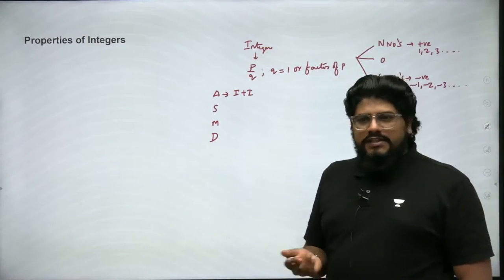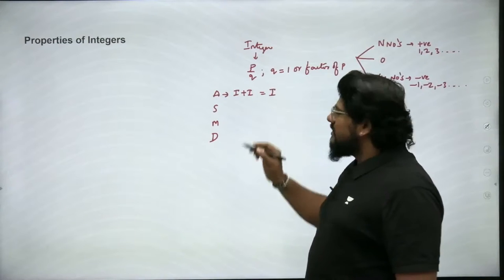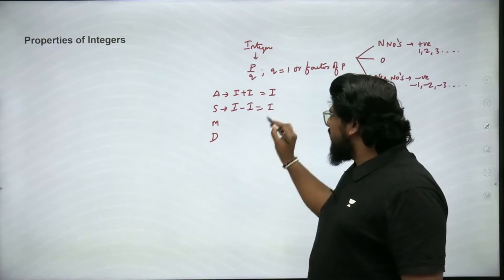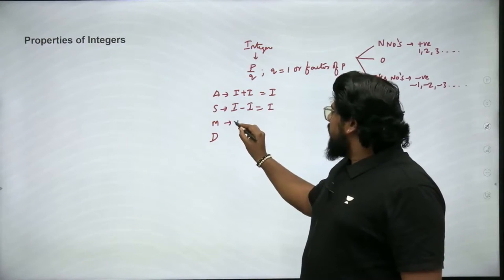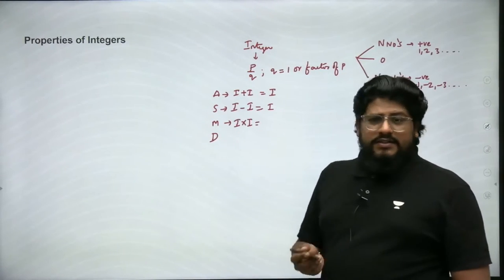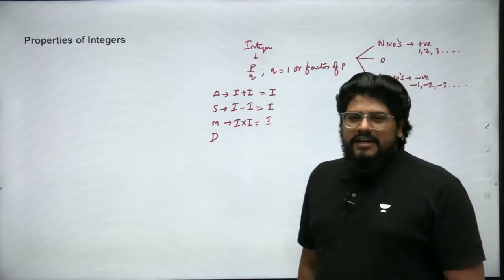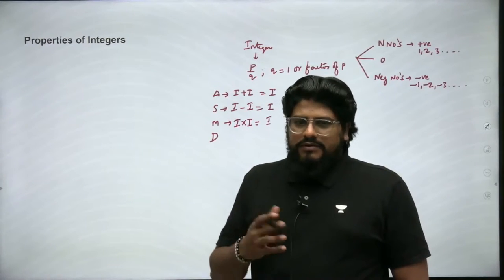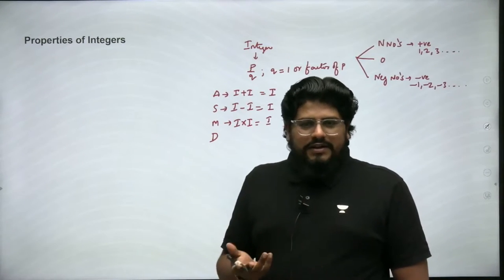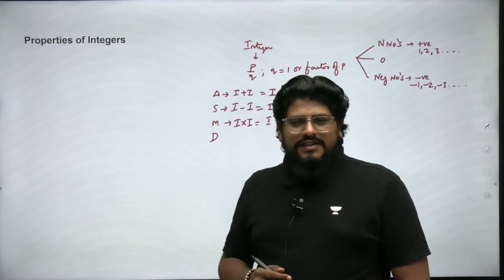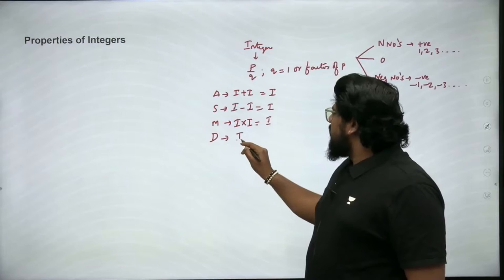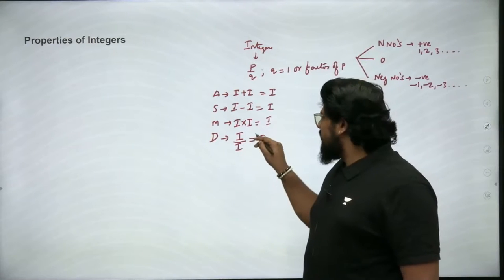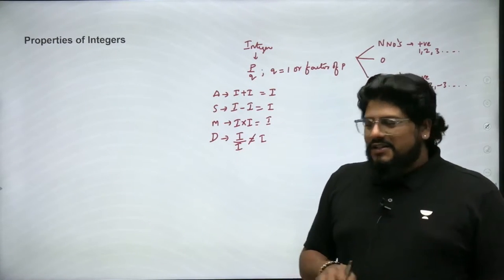When it comes to addition: 2 + 1 = 3, which is an integer. Subtraction: 2 − 1 = 1, which is an integer. Multiplication: 2 × 1 = 2, which is an integer. Whenever you're stuck with properties of integers, take two integers — at least 1 and 2 — and see the result. Now, division: integer divided by integer — is this always an integer?